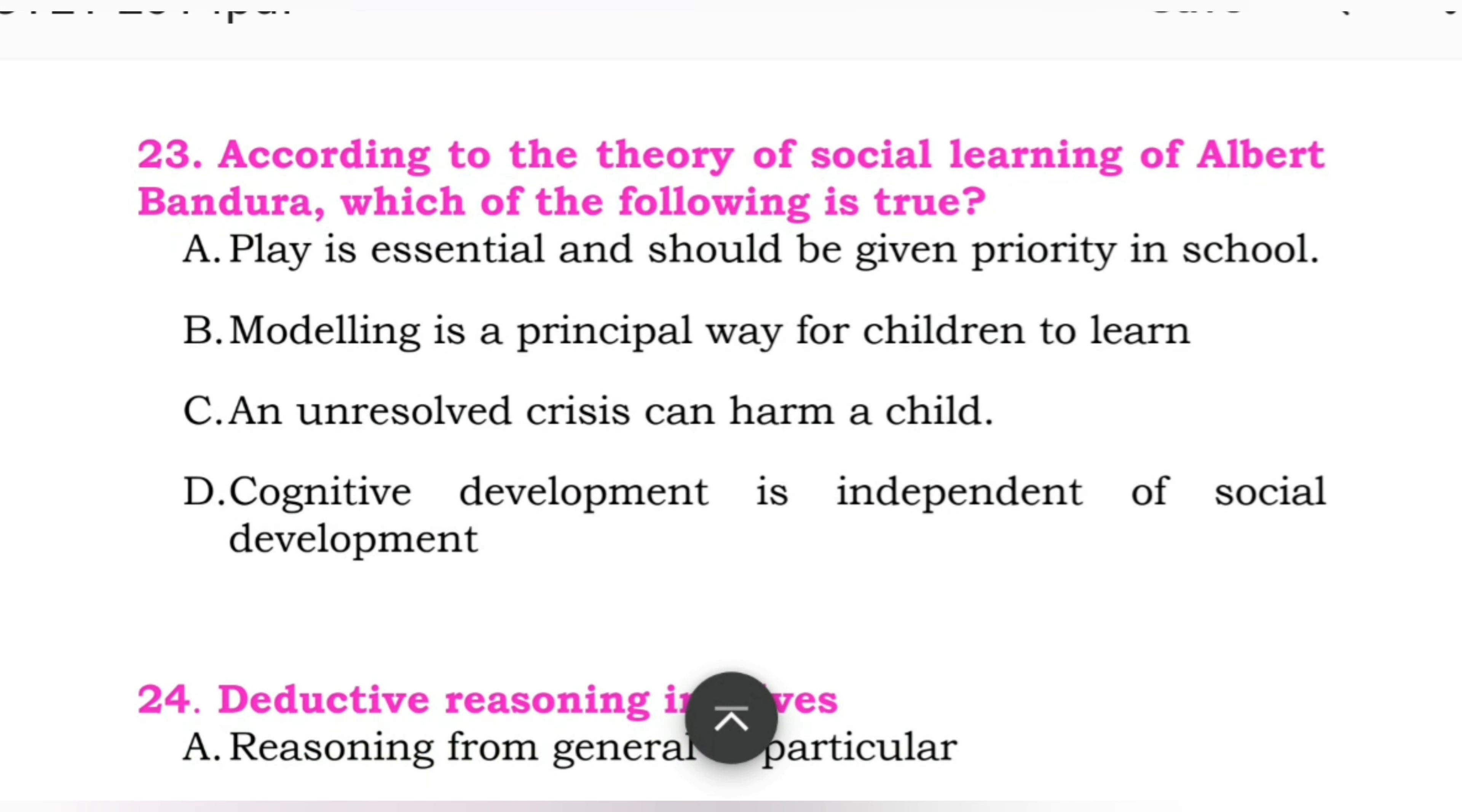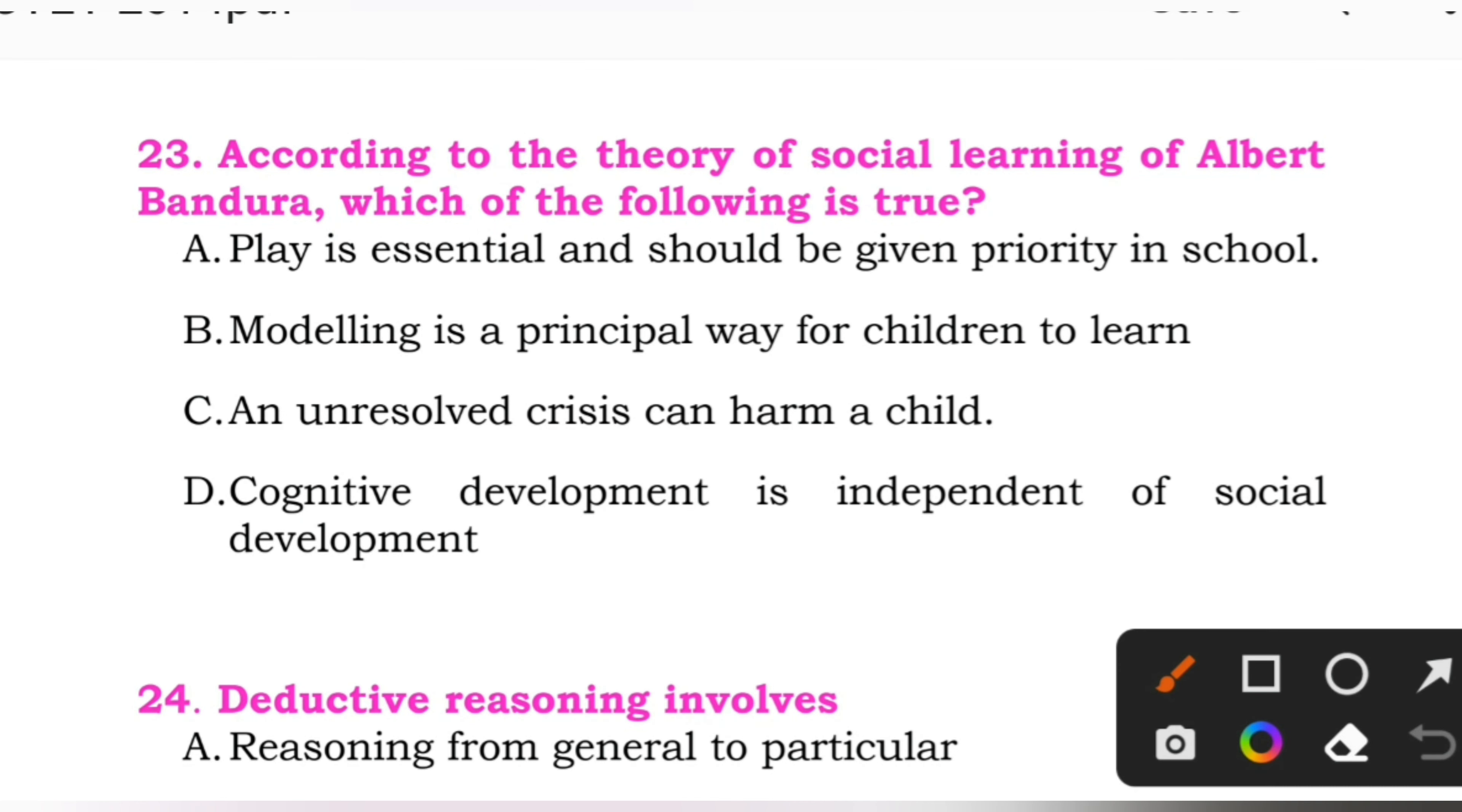Question number 23: According to the theory of social learning of Albert Bandura, which of the following is true? Options: A: play is essential and should be given priority in school. B: modeling is a principal way for children to learn. C: an unresolved crisis can harm a child. D: cognitive development is independent of social development. Here the right answer is C, an unresolved crisis can harm a child.